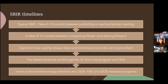Timelines vary by agency. With a broad brush: the fastest timelines are through the Air Force Dual Use Program and HHS. Some of the slowest average timelines I've seen are through USDA, NSF, and the DOD standard BAA program. When advising companies, they need to understand that USDA, NSF, and the DOD standard programs could potentially take up to 25 months to get to starting a phase two — that amount of time before they see results and return on investment.